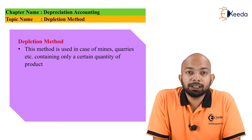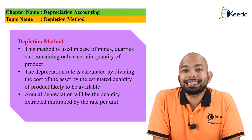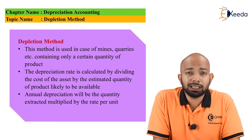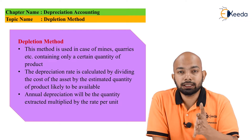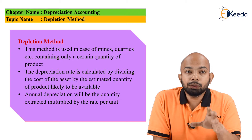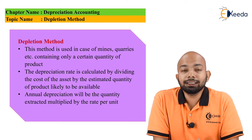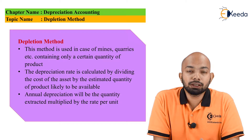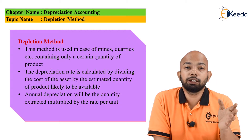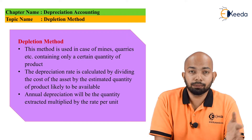The depletion rate method is basically used whenever there are scarce resources being taken out, such as in quarries and mines. The method used here is similar to the production rate method as well as the machine rate method.